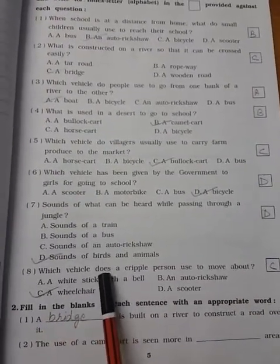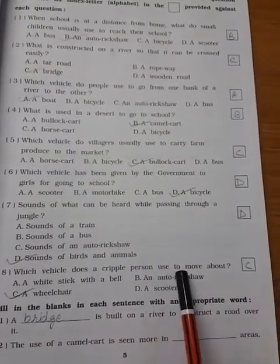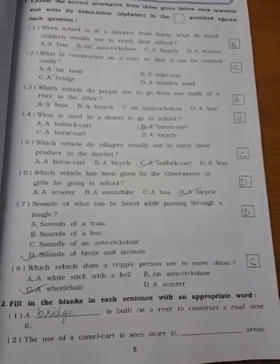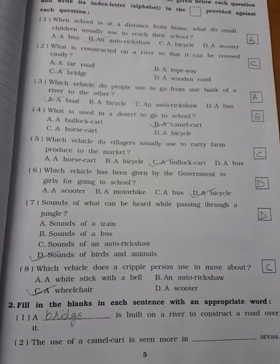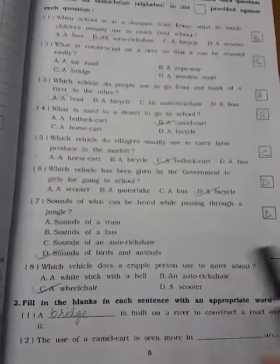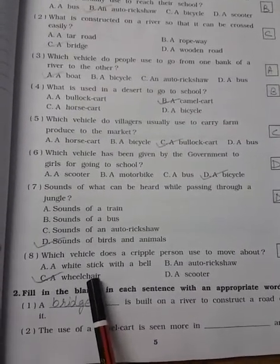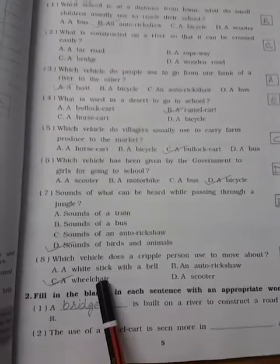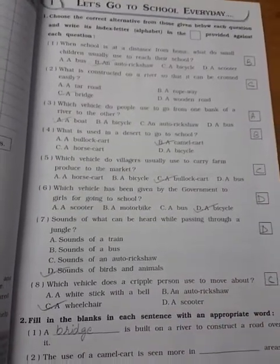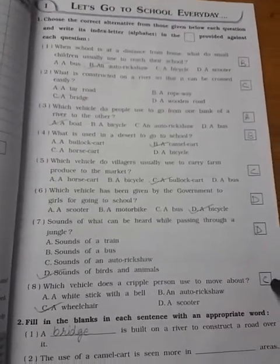Which vehicle does a crippled person use to move about? Means they are not able to walk, they are not able to run, not having proper legs. So they are using the wheelchair to move one place to the other. Okay children, this is your MCQ. I will send you the picture so that you can see and take from the picture.